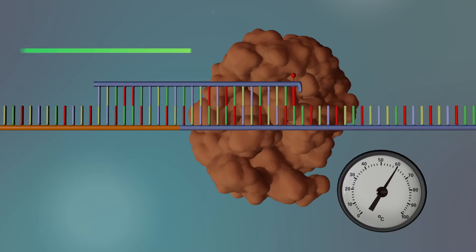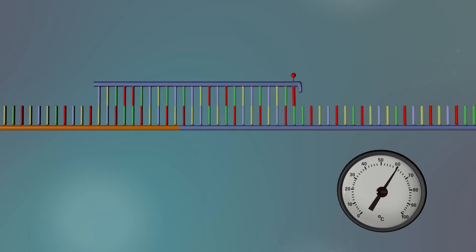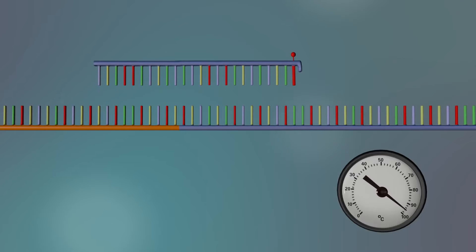Second, advances in sequencing technology. After decades of glacial progress, the Human Genome Project achieved its 2001 breakthrough by pioneering a method called shotgun sequencing.